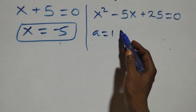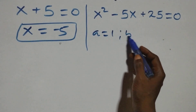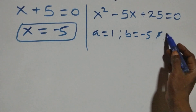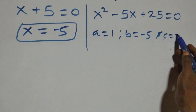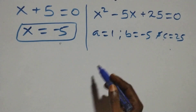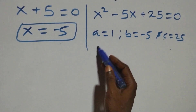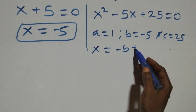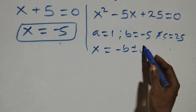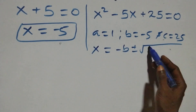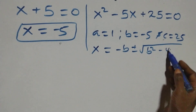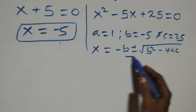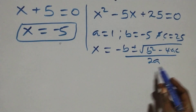Here we have a quadratic equation where a equals to 1, b equals to minus 5, and c equals to 25. From the quadratic formula, x equals to minus b plus or minus square root of b squared minus 4ac, all over 2a.